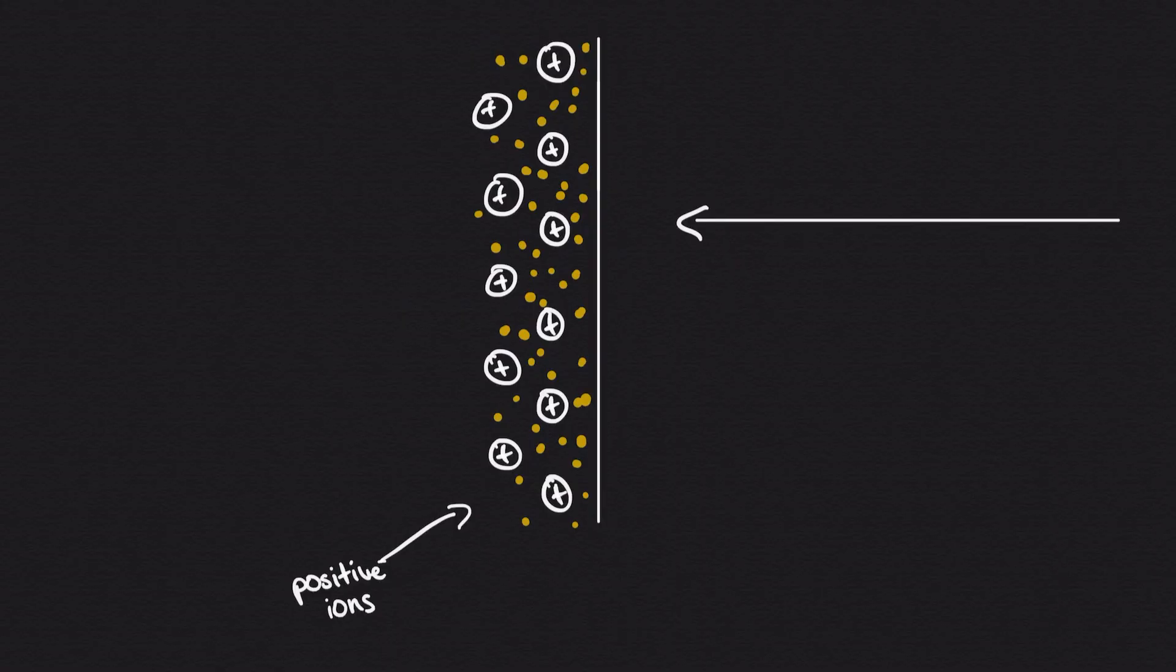As we know, light is an oscillating electromagnetic wave. When incoming light hits the surface of the metal, it causes the electron field to oscillate.